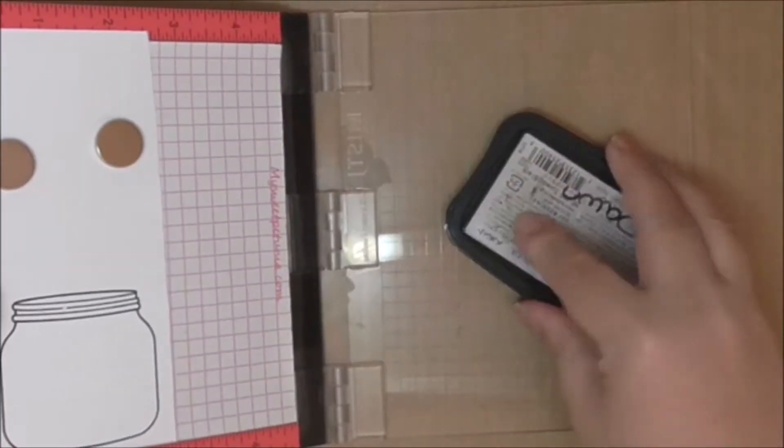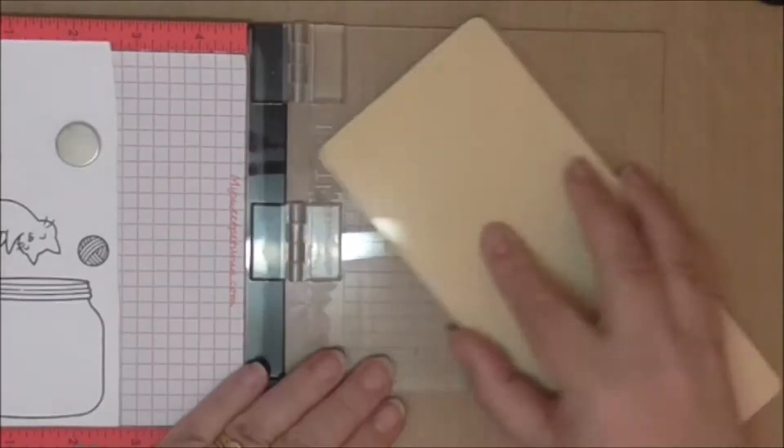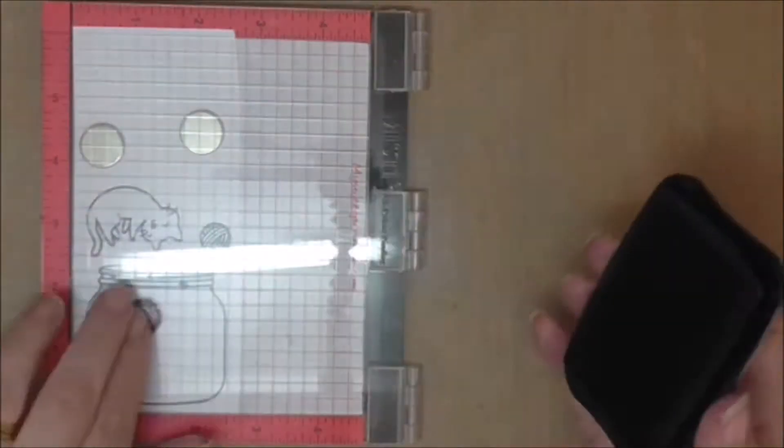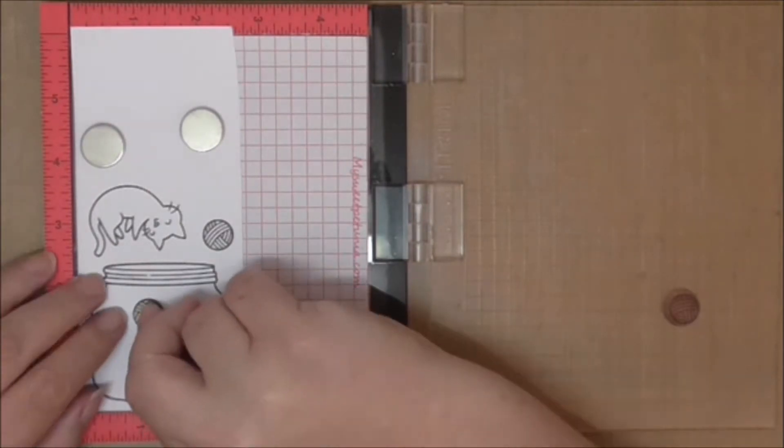What I'm doing now is double stamping with Memento Tuxedo Black Ink. I'm Copic coloring today and I like to double stamp because it's darker. And if you're wondering why is she putting a ball of yarn in that jar? Well I say why not?